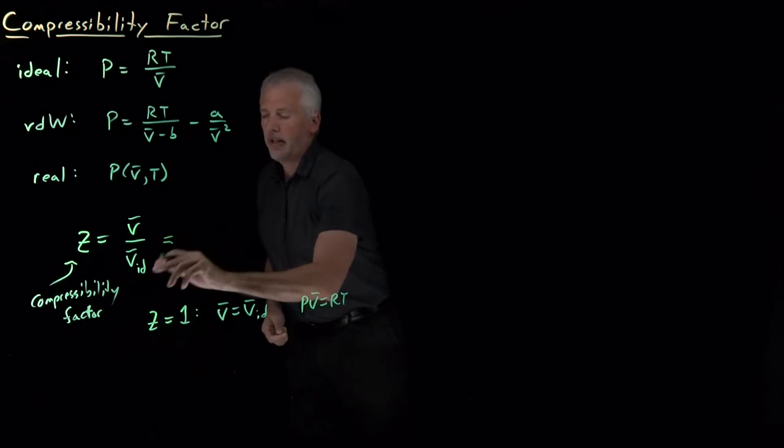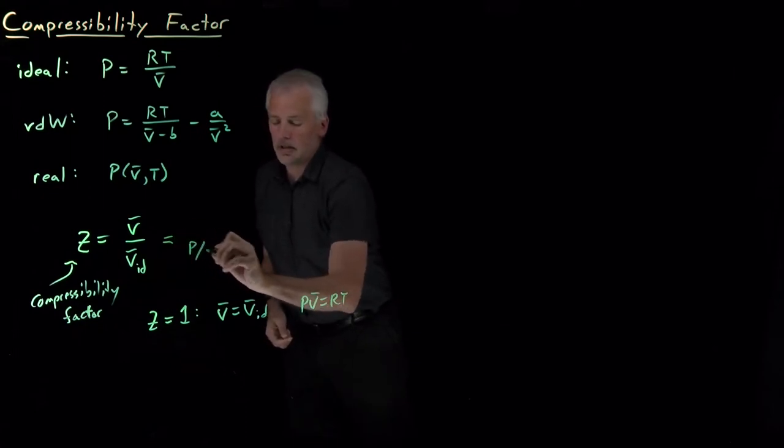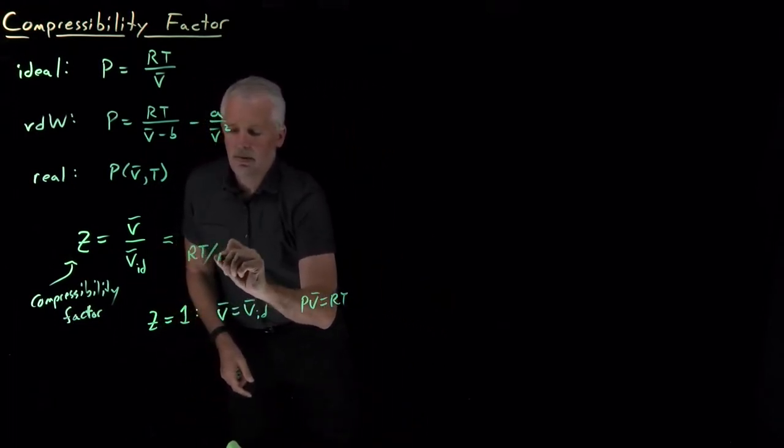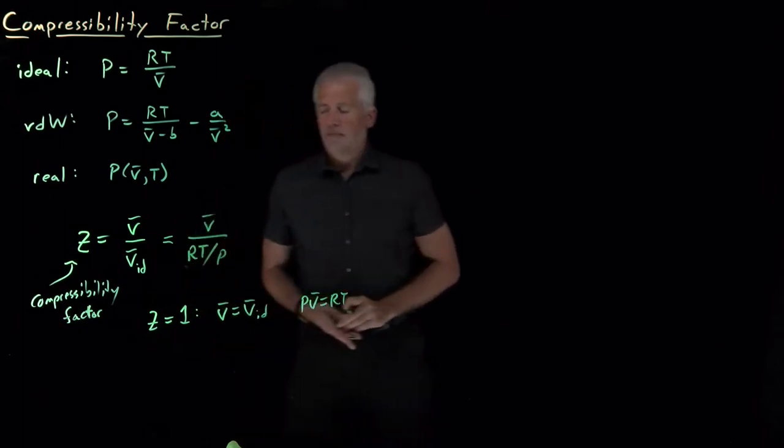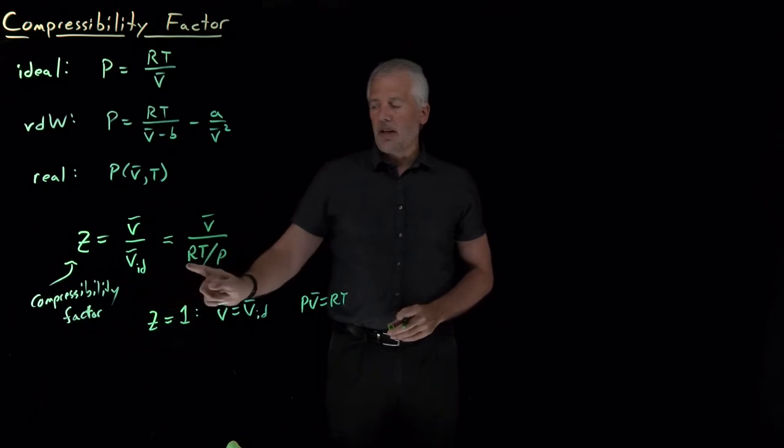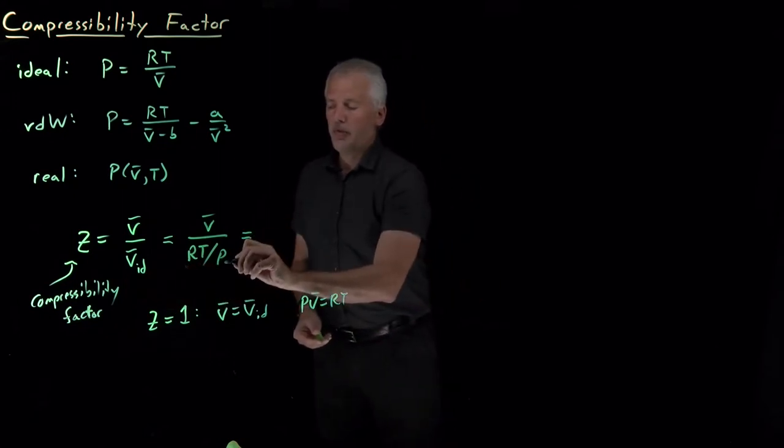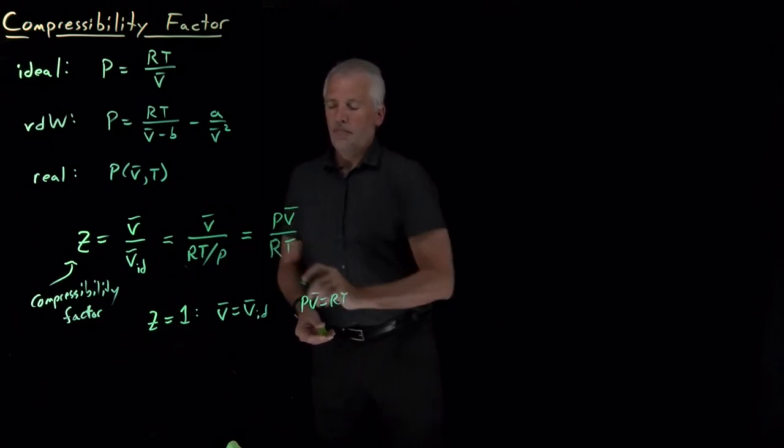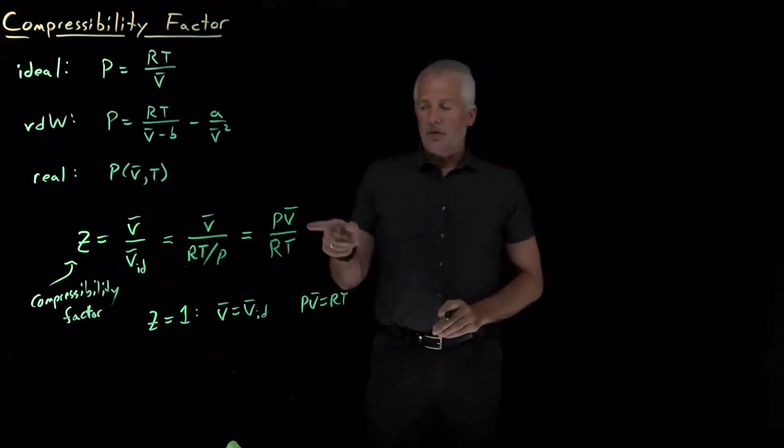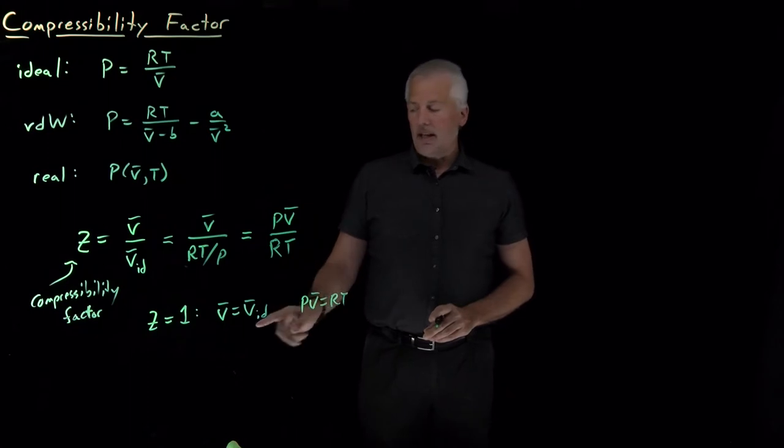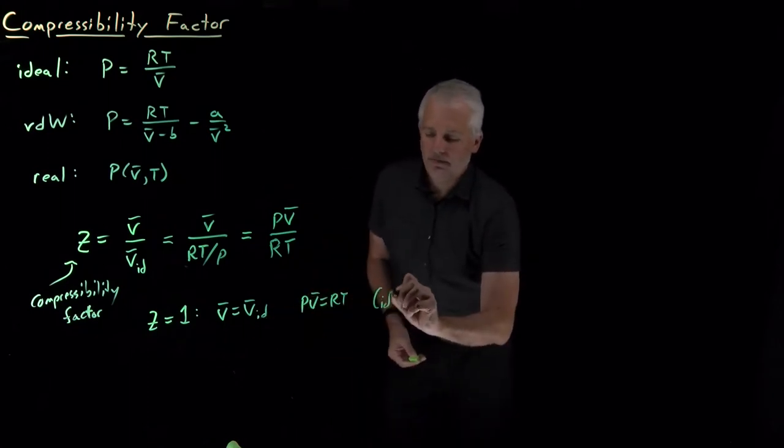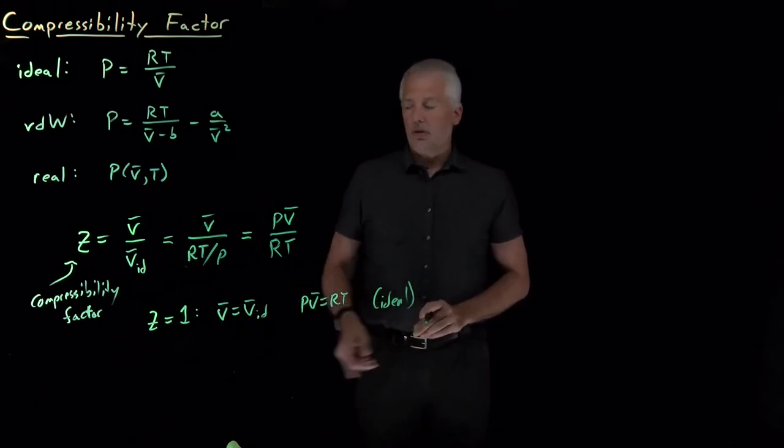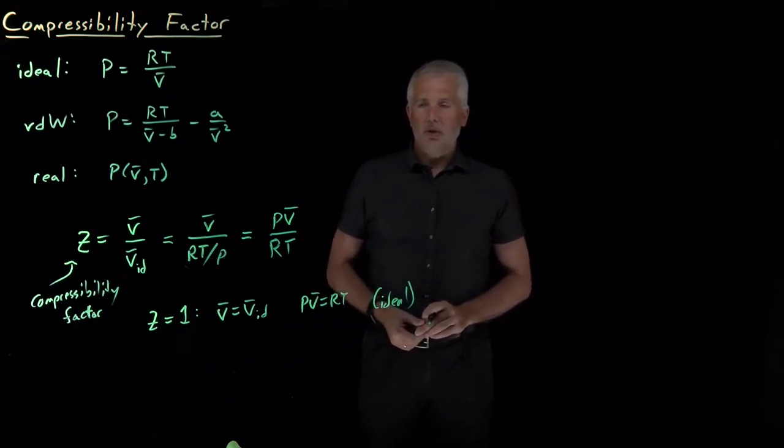If I rewrite the ideal gas volume as RT divided by pressure, I've just used the ideal gas law to rewrite V_ideal as RT over P. Another way to think about the compressibility factor is it's the ratio of PV̄ to RT. Again, if the gas is behaving ideally, PV is equal to RT, the volume equals the ideal gas volume, and the compressibility is 1. Those are all identical ways of saying the same thing.